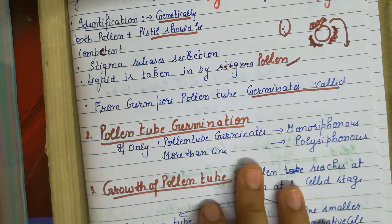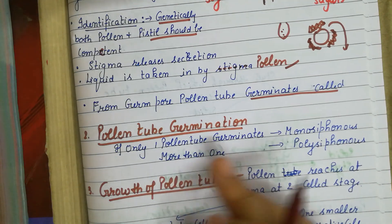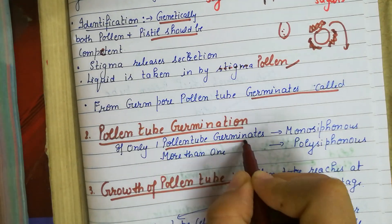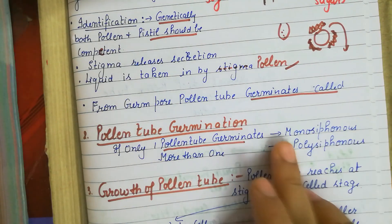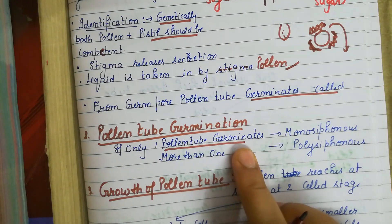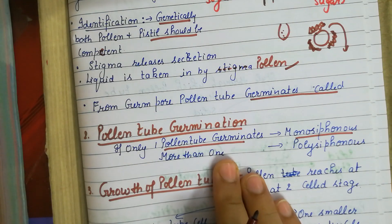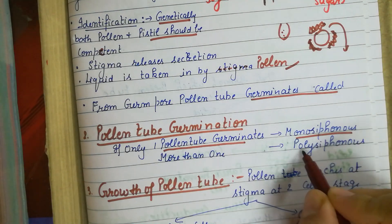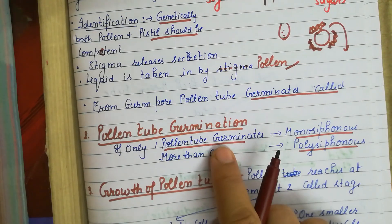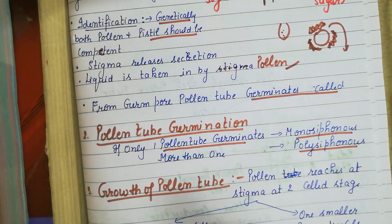Usually in flowers, only one pollen tube germinates. The most common situation, where only one pollen tube germinates, is called monosiphonous. If more than one pollen tube germinates, that is called polysiphonous. So mono means one tube, and poly means more than one.